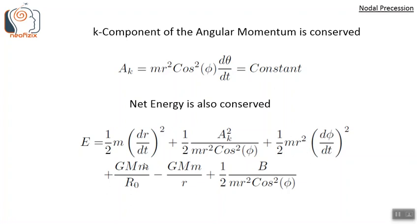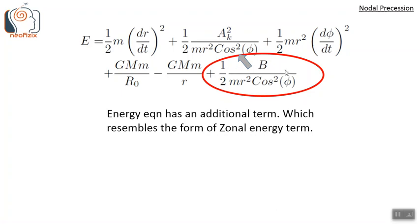The term GMm/r₀ is a constant and is not important to describe here. The term −GMm/r is the familiar gravitational potential energy. There is an additional energy term: ½b/(mr² cos²φ). In case of pure elliptic orbits without nodal precession, this b term will be zero; here it is some non-zero constant. Note that this term ½b/(mr² cos²φ) is similar in form to the zonal energy term ½A_k²/(mr² cos²φ).